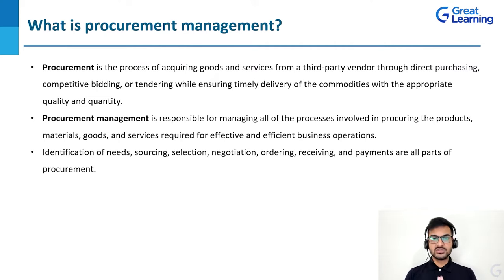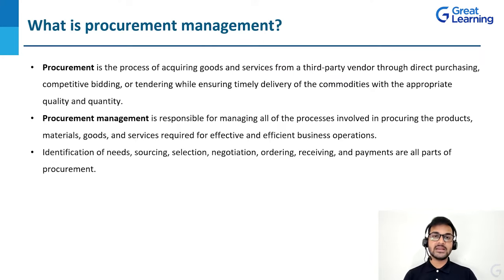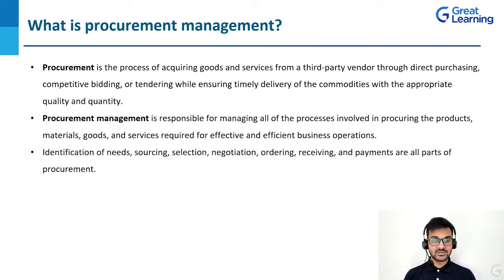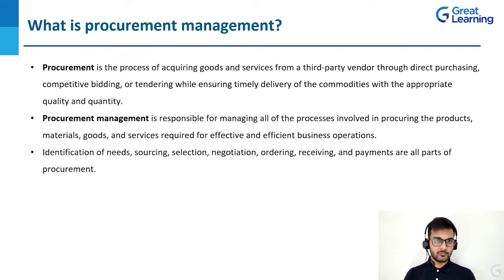Identification of needs means figuring out what product or service your company actually requires. Then sourcing and selection — out of all those bids, what exactly are you selecting and why? You compare competitors and analyze each bid. That is part of procurement management, along with negotiation, contract signing, ordering, receiving, and payments — all these things are part of procurement itself.